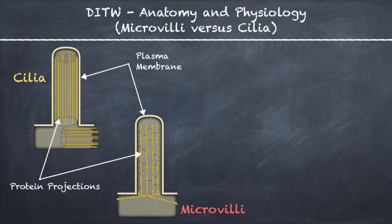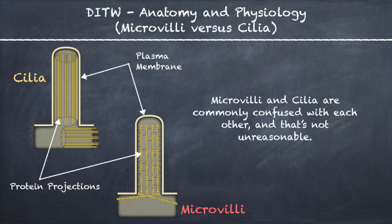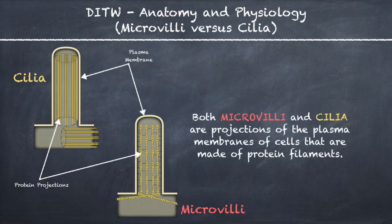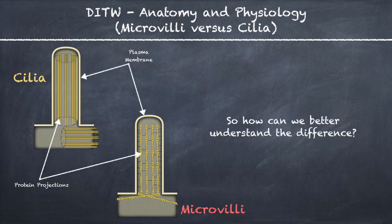This is DITW Anatomy & Physiology and you are watching the video on microvilli versus cilia. Microvilli and cilia are commonly confused with each other, and that's not unreasonable. Both microvilli and cilia are projections of the plasma membranes of cells that are made of protein filaments. So how can we better understand the difference?